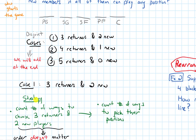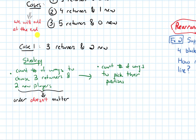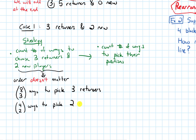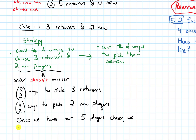We want to pick 3 returners from a total of 8 returning members, so there are 8 choose 3 ways to pick the 3 returners. We use combinations here because the order in which we pick the set of 3 returners does not matter. Similarly, we've got to pick 2 new players out of 4 total new players, so there are 4 choose 2 ways to pick the 2 new players. Once we have our 5 players chosen, we must decide their positions.